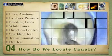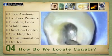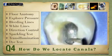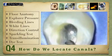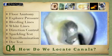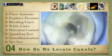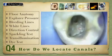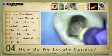Then we talk about explorer pressure. We use an explorer — not an endoprobe — because you simply keep scratching the floor of the pulp chamber until you find the catch. Then you try to proceed with this catch, and with lubrication and a lot of fluid irrigation, you should be able to locate the canals, as you can see in the picture here.